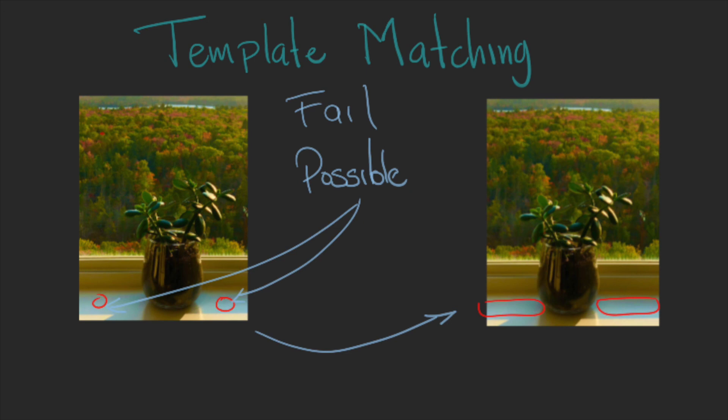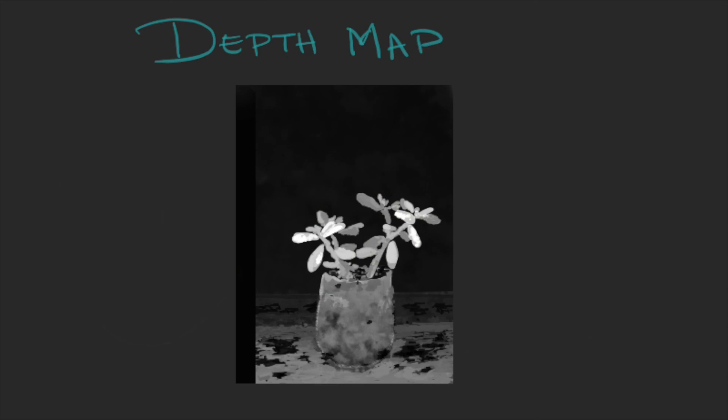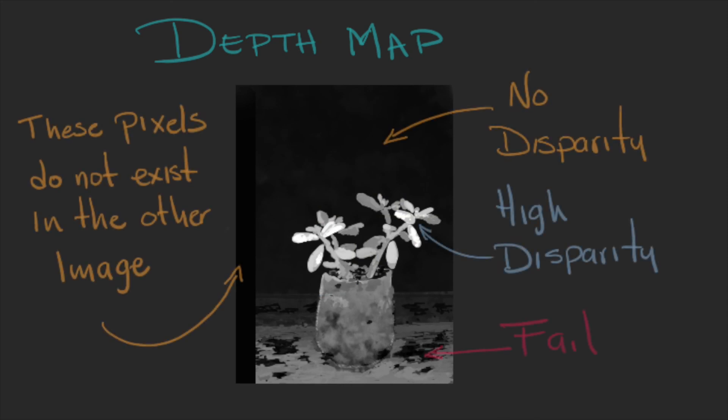Like we have seen in previous methods, using a large window will be robust against noise, but you will also lose some detail. So anyways, for each pair of points, you just need to apply the formula and build the depth image. Here, the values represent an estimation of the distance between the objects and the camera.